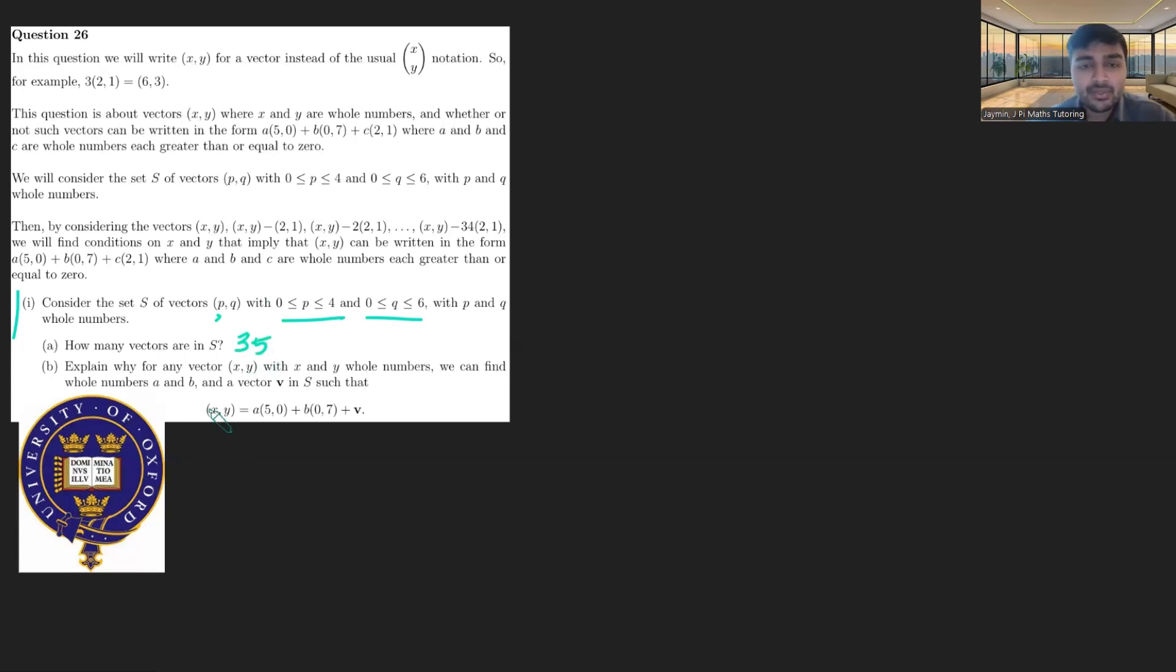So 35 vectors in S. We want to explain why for any vector xy with x and y whole numbers, we can find whole numbers a and b and a vector v in S such that xy equals a(5,0) plus b(0,7) plus v. And this is just essentially division. So if x is any integer, for example, x can be written as 5a plus p, where p is a number between zero and four. And that's just how division works, right? X is going to have a residue mod 5. And that number is p, and it's going to be either zero, one, two, three, four. And similarly for y, y is going to equal 7b plus q here, where q is between zero and six for a very similar reason. So there's going to be some integers a and b that satisfy this. And then the vector v here would literally just be whatever (p,q) is. And then you can just check that this equation here works. A nice little intro.